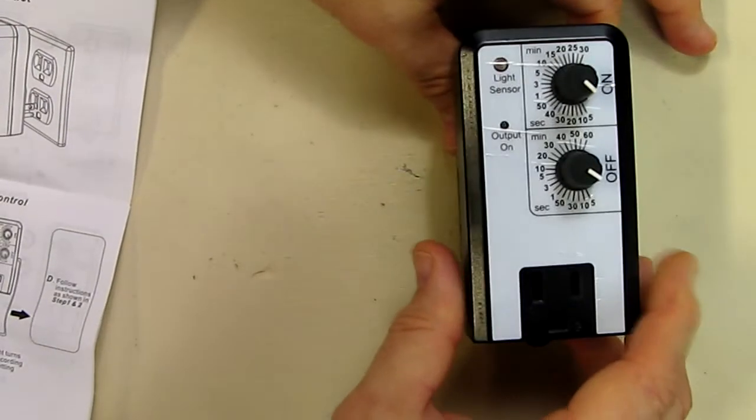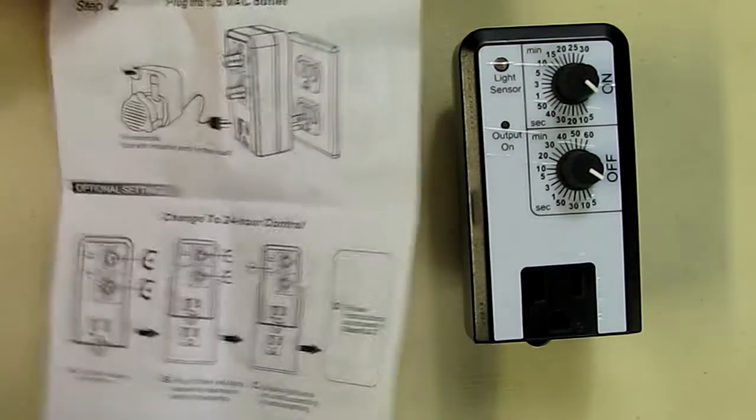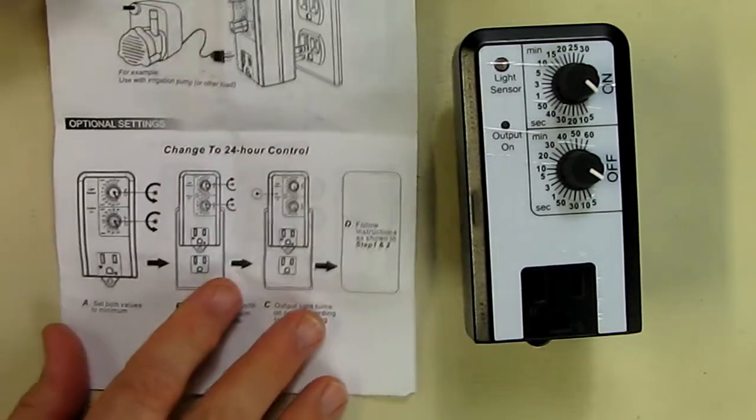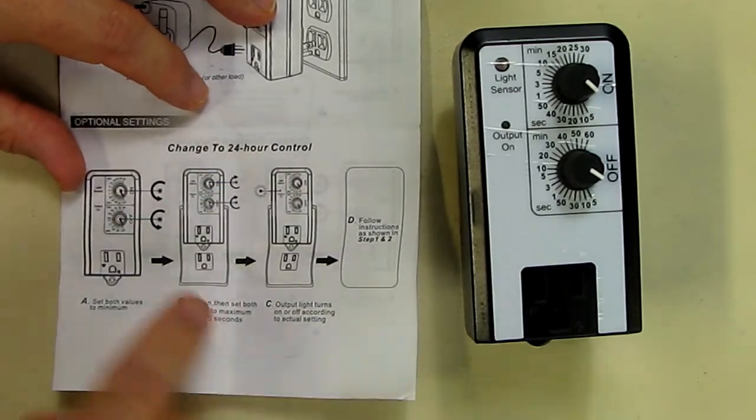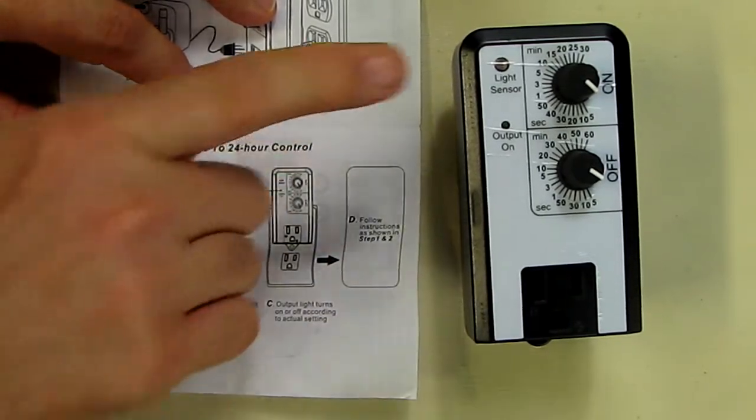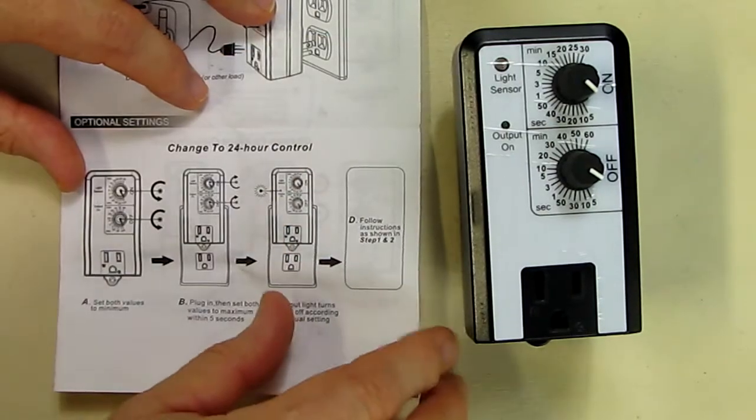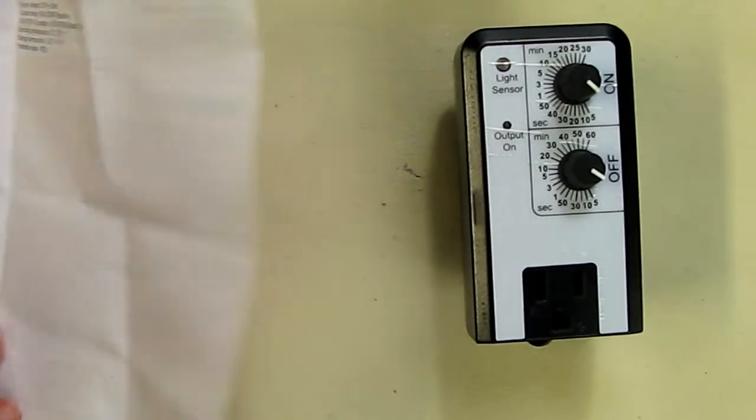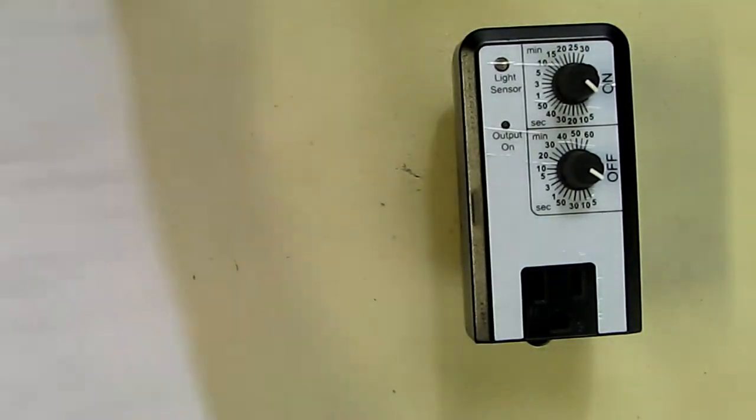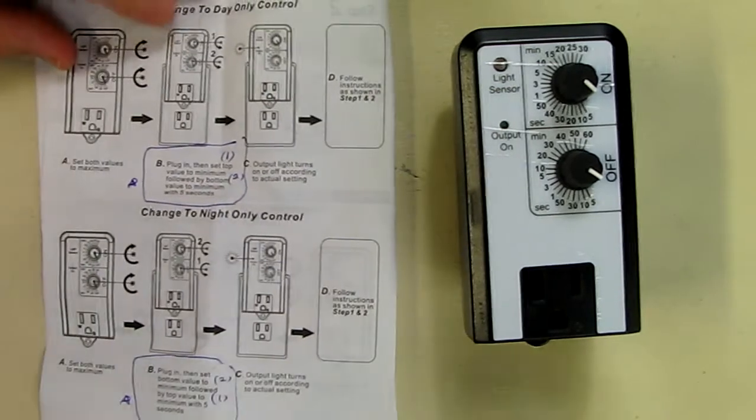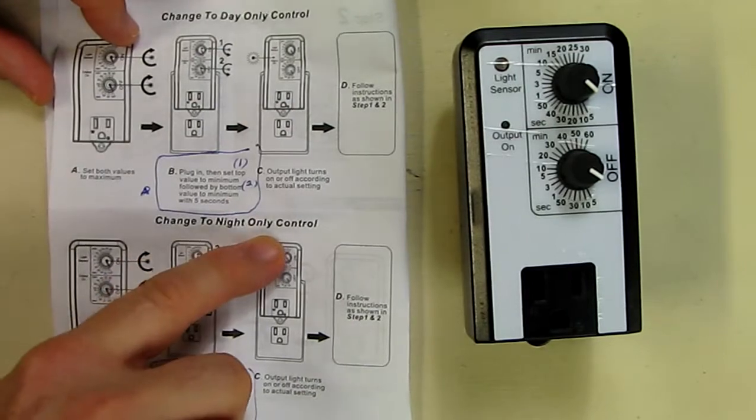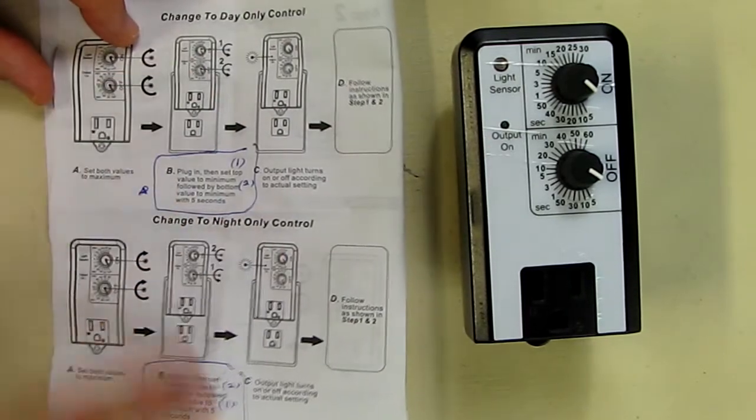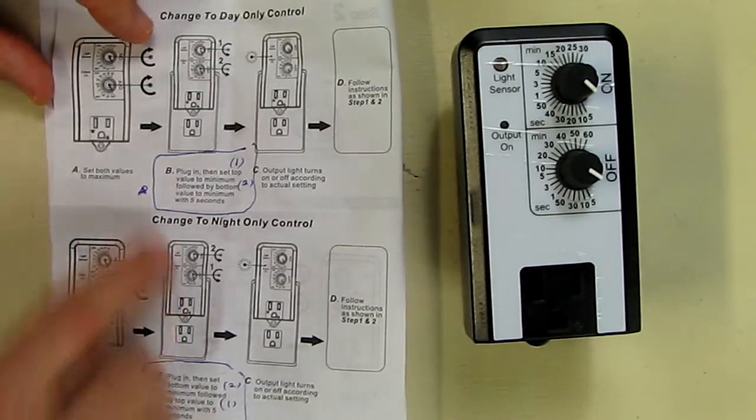It's very important that you read the instruction sheet. It was a little bit confusing to me at first. There's ways to make this thing pulse on and off for 24 hours day and night where it will ignore the light sensor. And then when you turn the page you have another sheet right here which tells you how to do it for just day only control and night only control.